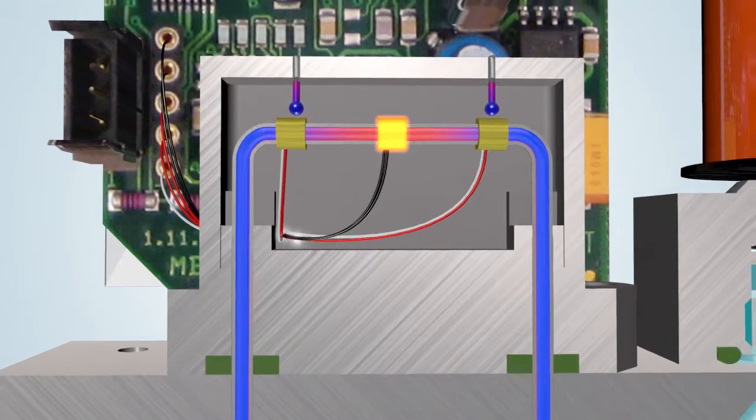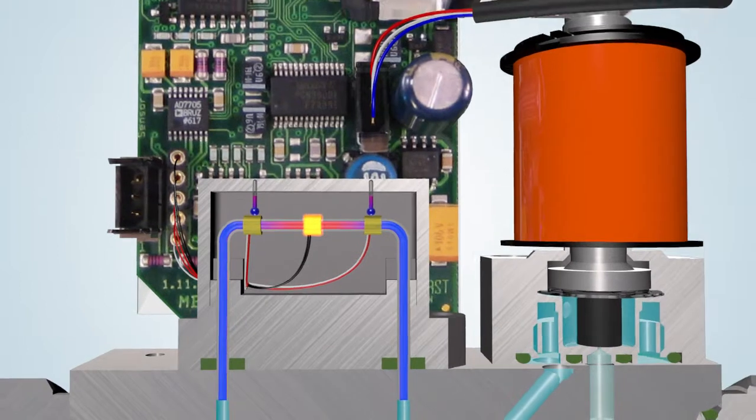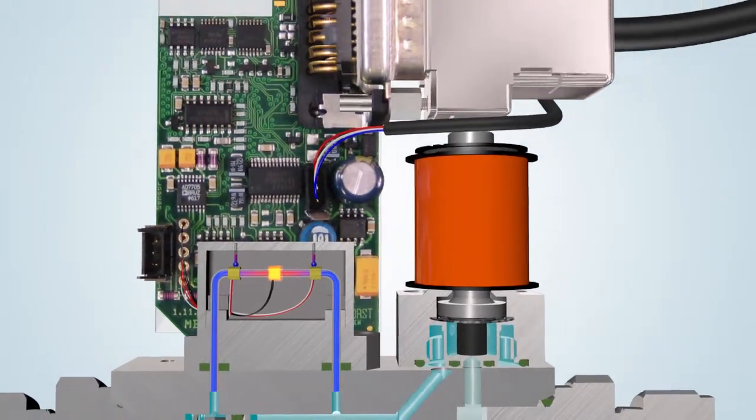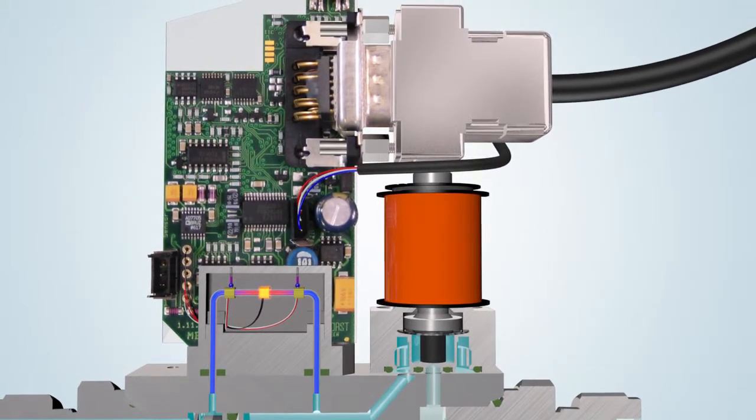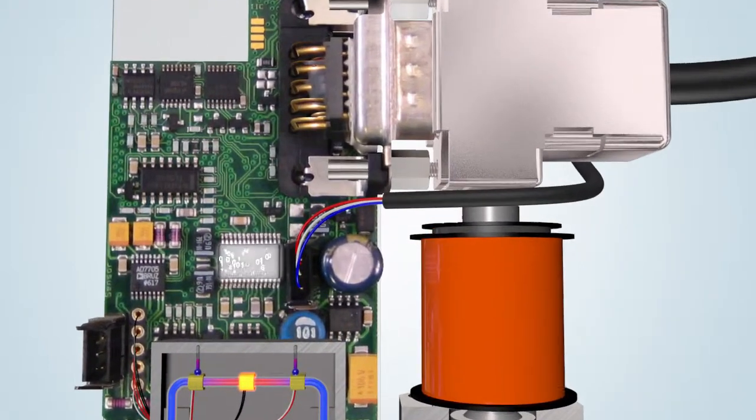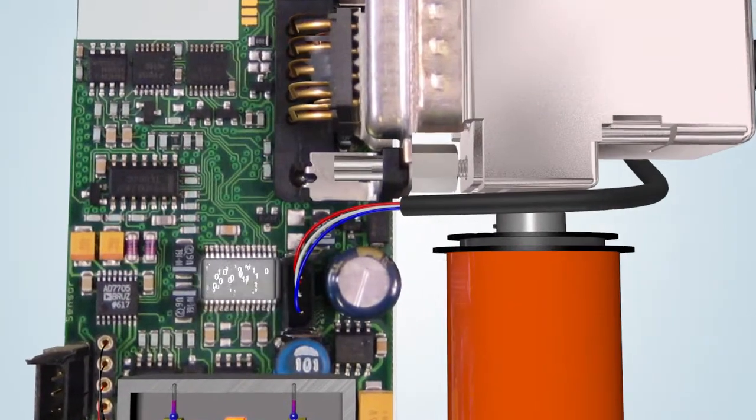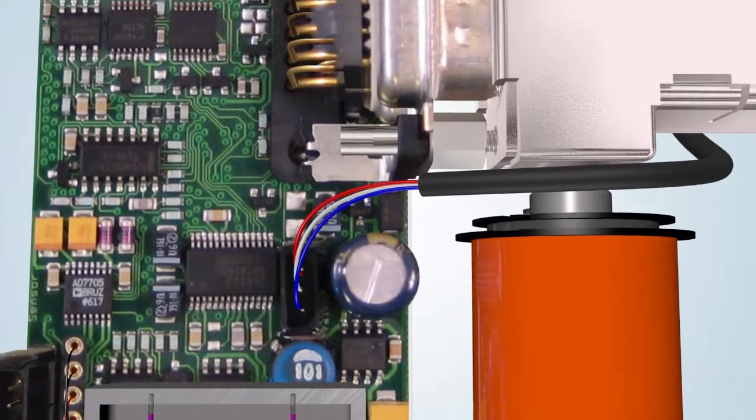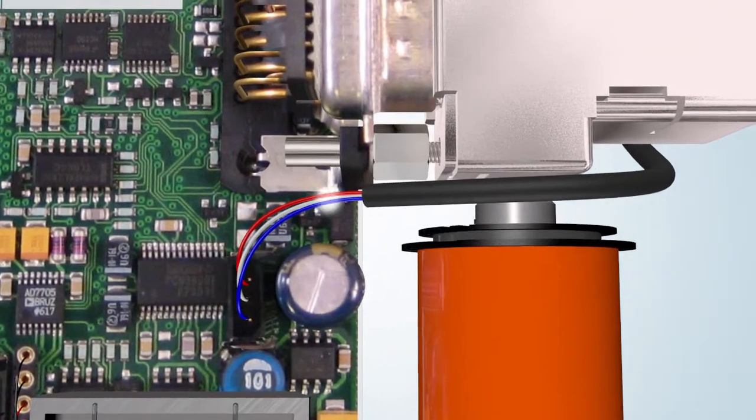This signal is forwarded to the microprocessor. The instrument receives a set point via the PC, PLC or analog port. This required value is compared with the measured value. If the required value is higher than the measured value, the PID controller will actuate the control valve.